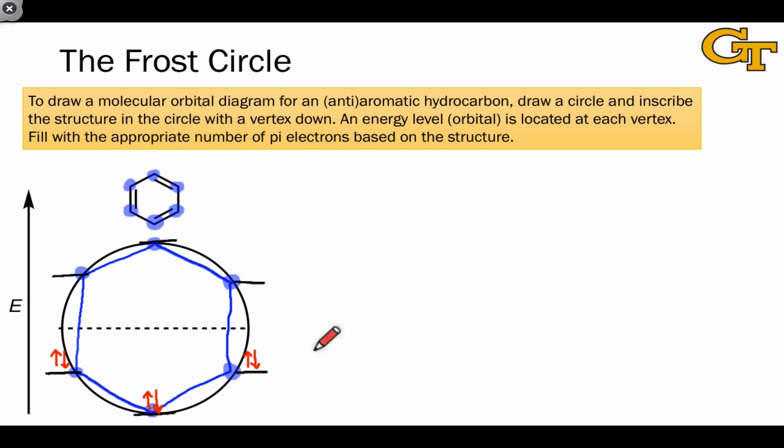And that's it. We've just drawn a molecular orbital energy diagram for benzene using a very simple mnemonic device. One thing that's worth mentioning is that this line that divides the circle in half is the non-bonding energy level, the energy corresponding to a bare atomic 2p orbital. And so the Frost circle also helps us see which orbitals are bonding and which are anti-bonding.